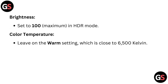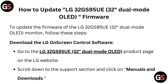Brightness: set to 100 (maximum) in HDR mode. Color temperature: leave on the warm setting, which is close to 6500 Kelvin. How to update the LG 32GS95UE 32 dual mode OLED firmware.